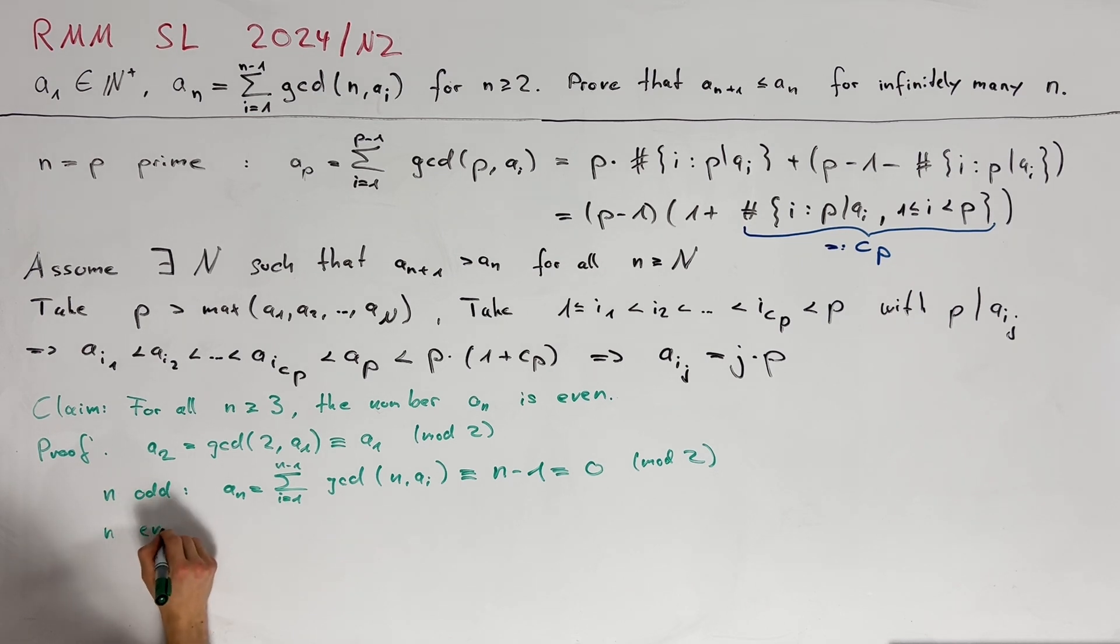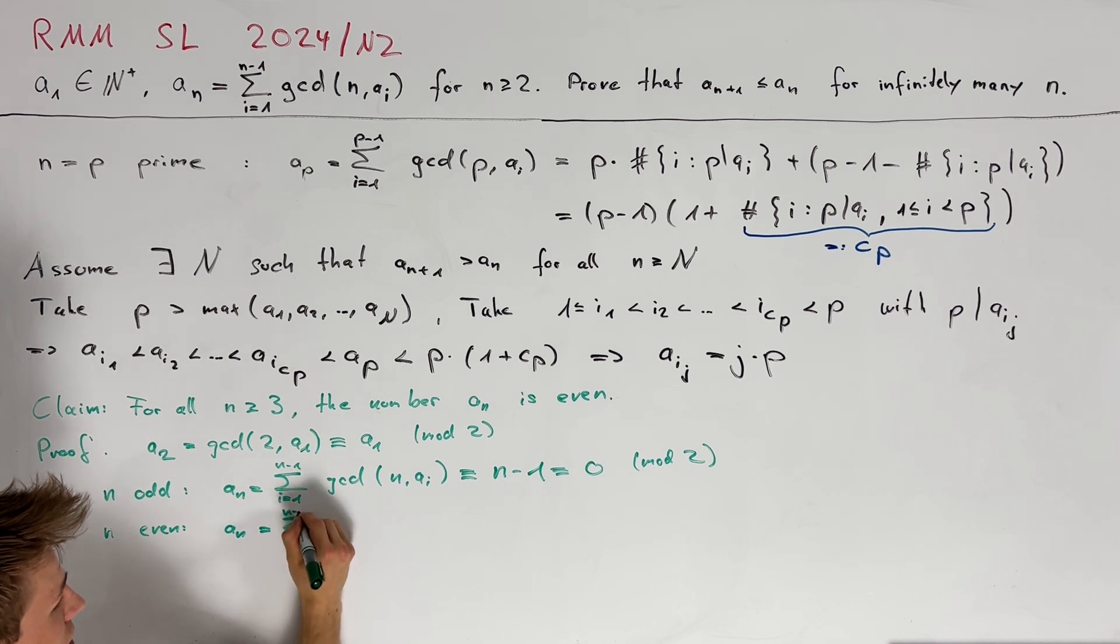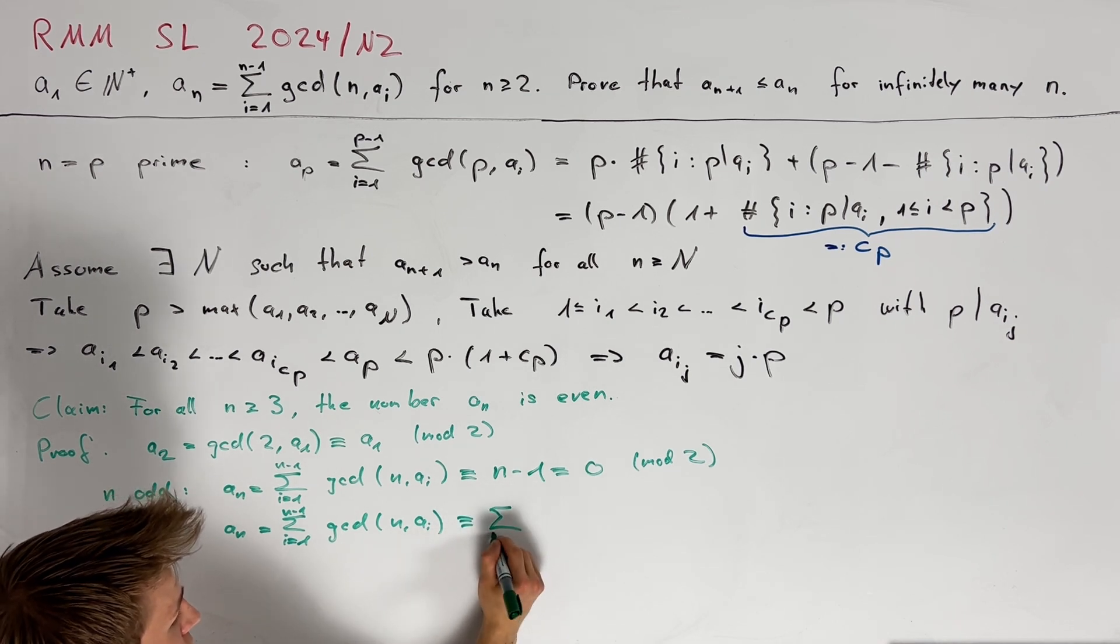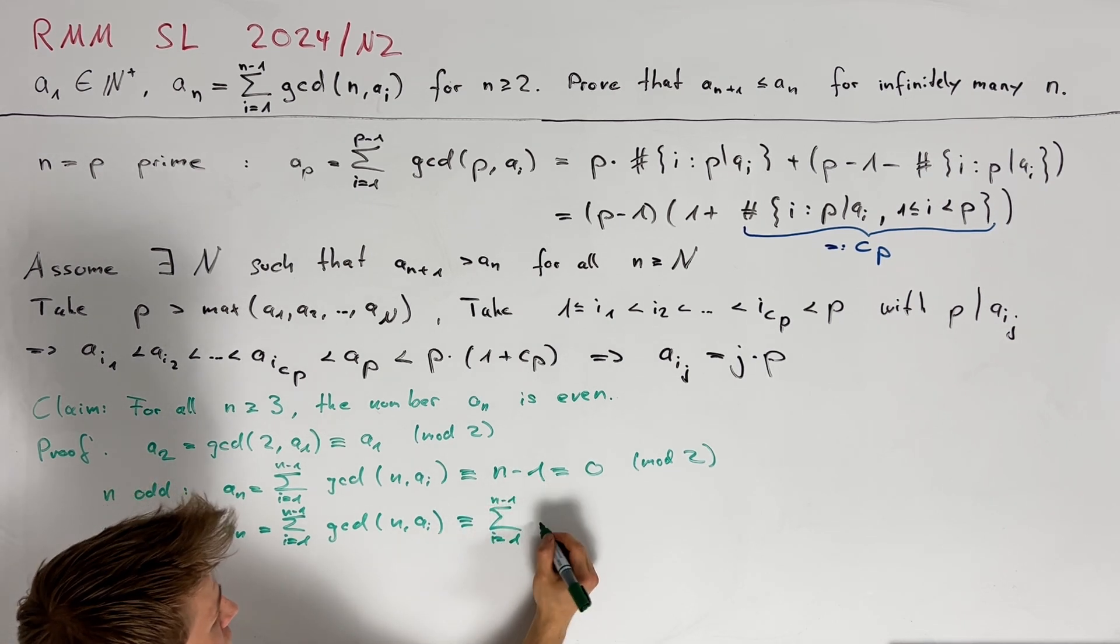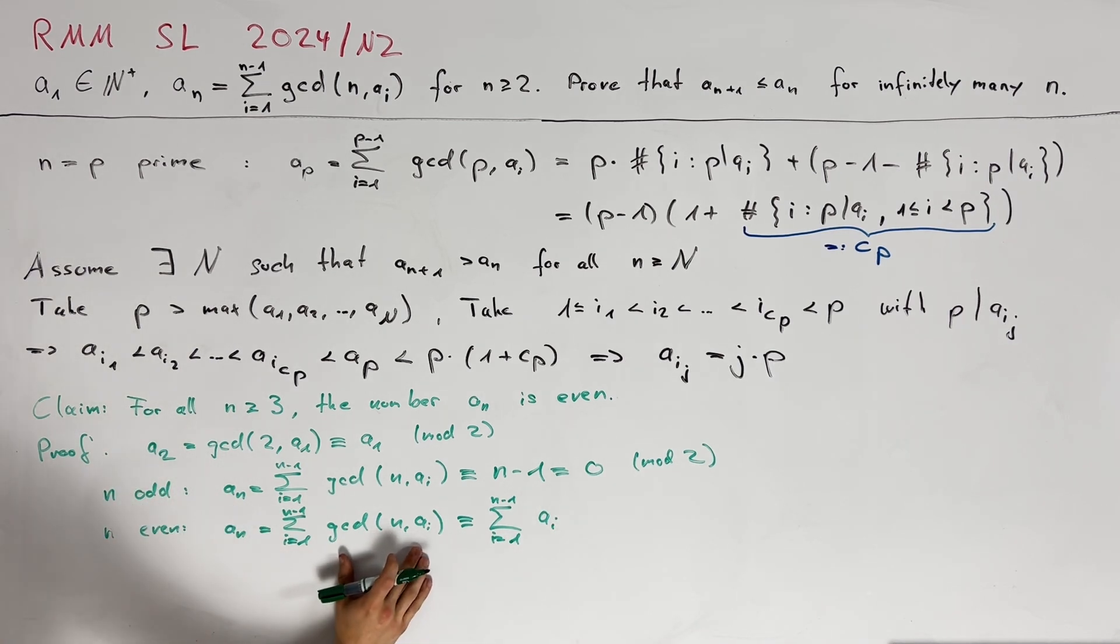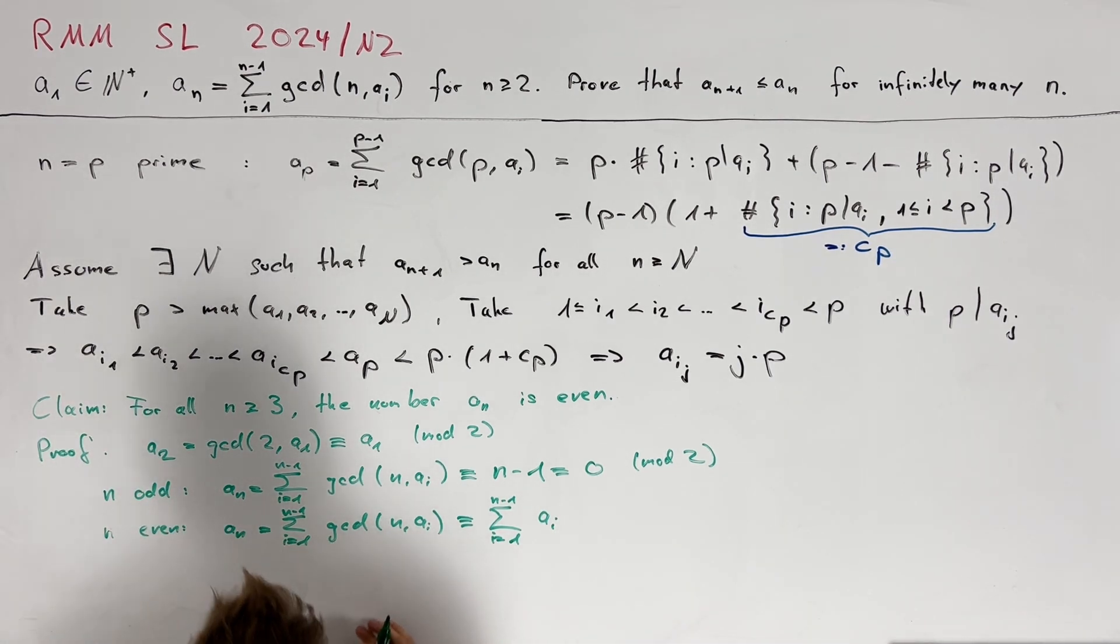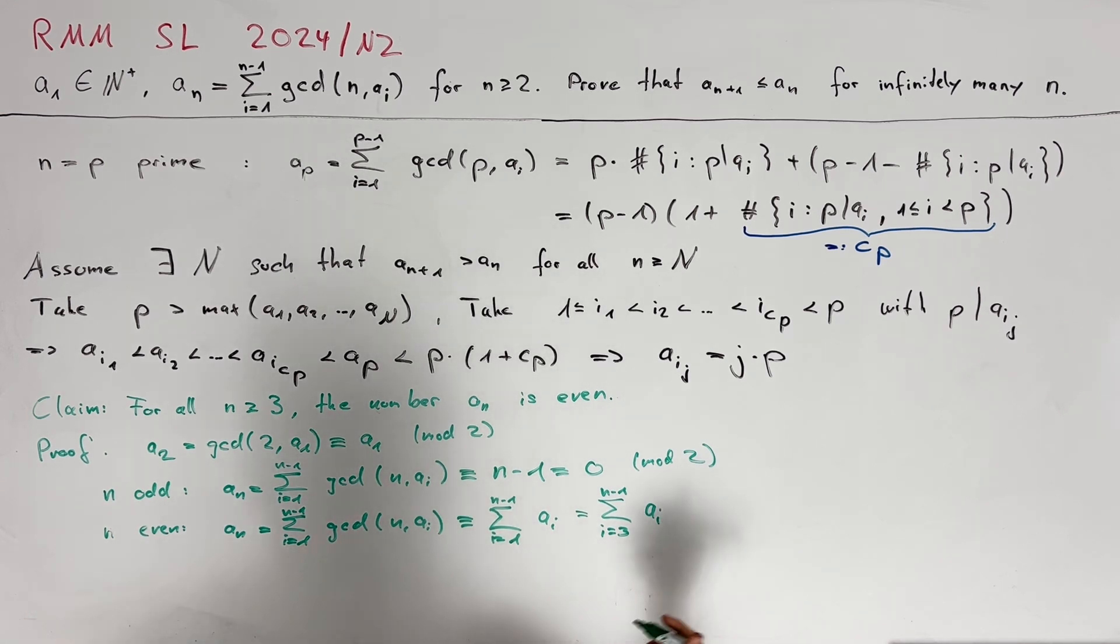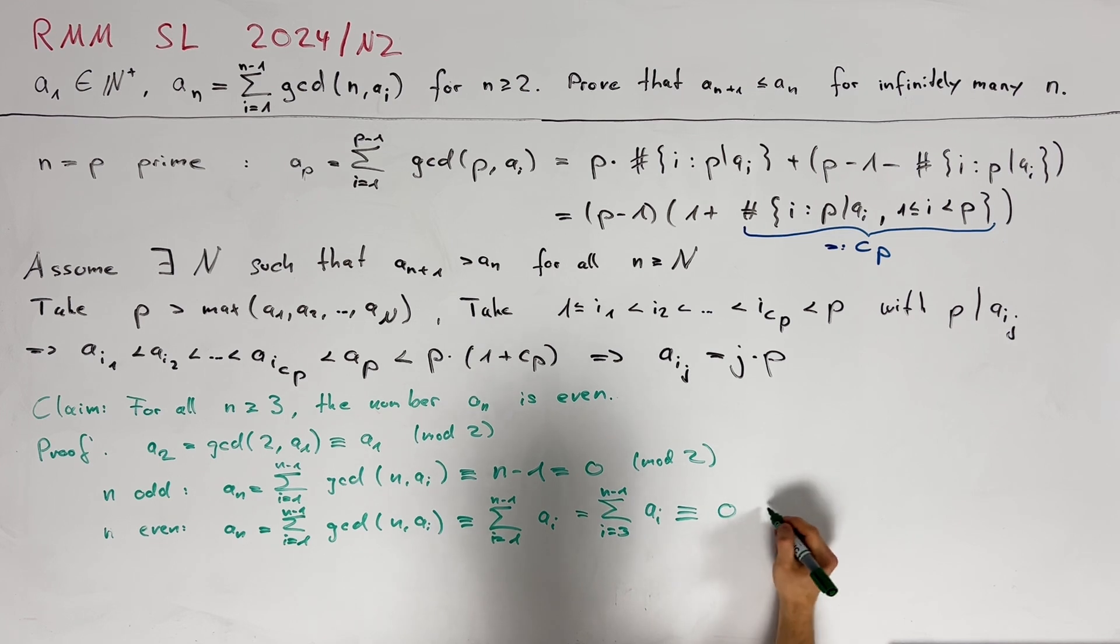In the even case we see that a_n which is congruent to the sum here is also congruent to the sum from i equals to 1 up to n minus 1 of a_i since this gcd has the same parity as a_i. As we already figured out a_2 is congruent to a_1 and therefore we can also start the sum here by i equals to 3 and now we see that if we do the proof by induction then all of these values a_i here are congruent to 0 modulo 2 and therefore by induction this is also congruent to 0 modulo 2.